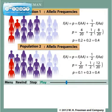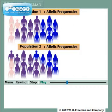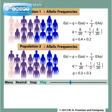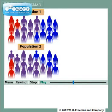The allelic frequency of little a is represented by the variable Q. This variable is equivalent to 1 minus P, but Q can also be obtained by adding the frequency of little a homozygotes in a population to half the frequency of heterozygotes. In both populations, Q is equal to 0.6. In contrast with the genotypic frequencies of population 1 and population 2, the allelic frequencies are identical.